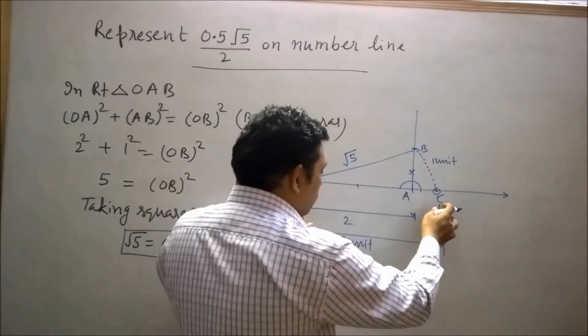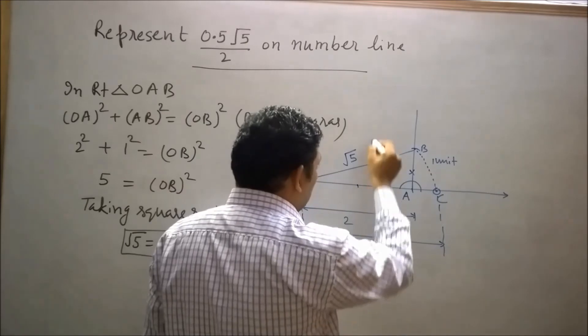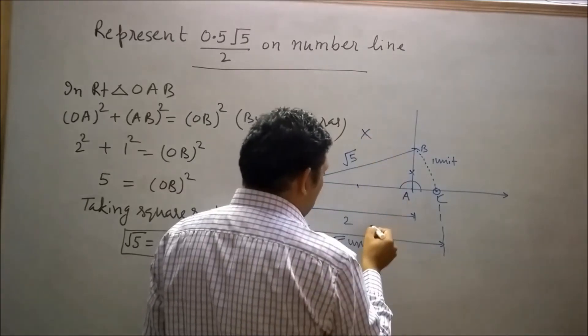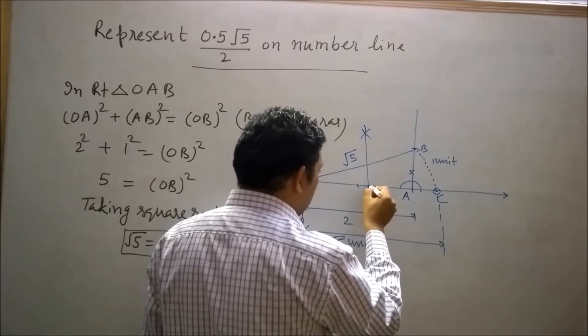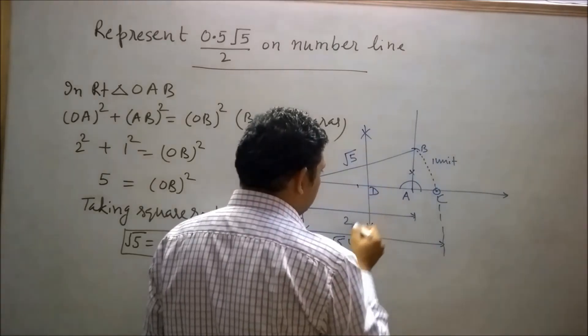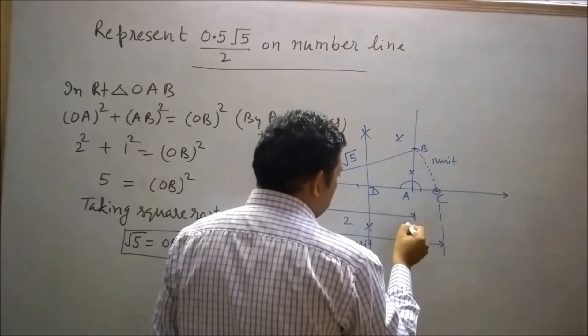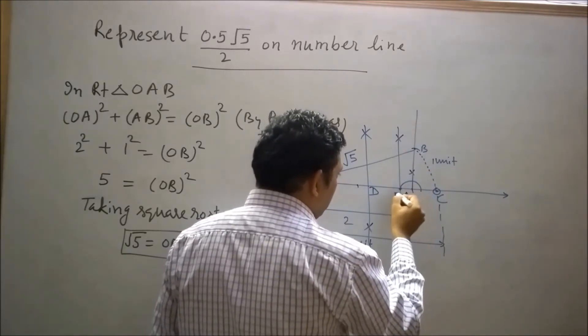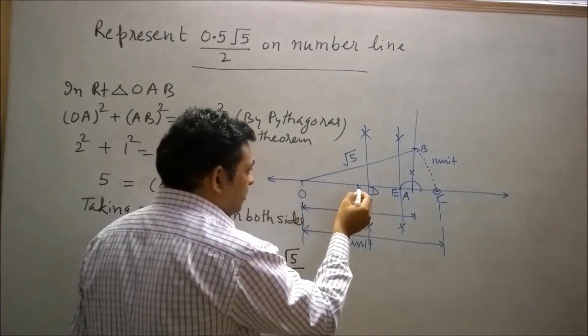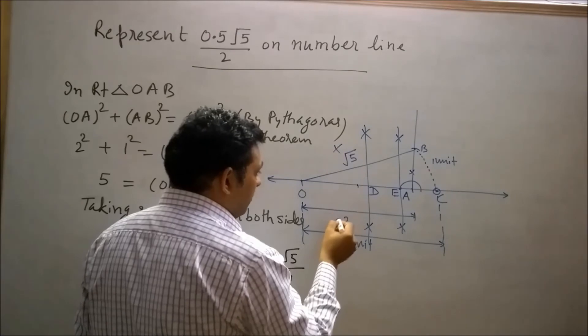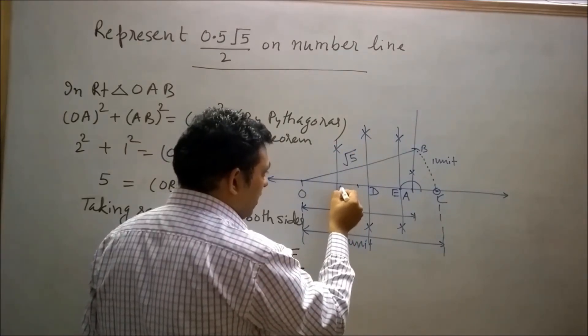Now we will divide OC into 4 equal parts with the help of a compass. So draw a perpendicular bisector of OC. Let's say this will intersect the number line at D. Now further draw a perpendicular bisector of CD. Let's say this will intersect at point E. And now draw a perpendicular bisector of OD with the help of compass. Let's say this will intersect at point F.